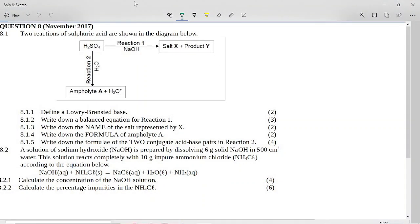This is the November 2017 grade 11 question on acids and bases. It says two reactions of sulfuric acid are shown in the diagram below. So here's my sulfuric acid. The first reaction reacts it with sodium hydroxide and the second reaction reacts it with water.